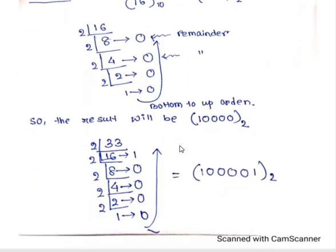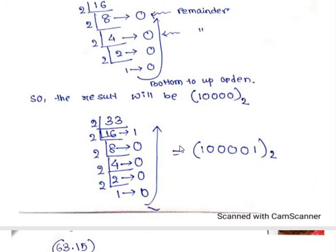Let me discuss it once again with another example. Say the number is 33 in base 10. How can I convert it to a binary number? I will divide 33 by 2: I get 16 as result and 1 as remainder. I divide 16 by 2: result 8, remainder 0. I divide 8 by 2: result 4, remainder 0. I divide 4 by 2: result 2, remainder 0. I divide 2 by 2: result 1, remainder 0. Since 1 is lesser than 2, I can't divide further. Writing from bottom to top order: 1, 0, 0, 0, 0, 1 — base 2.